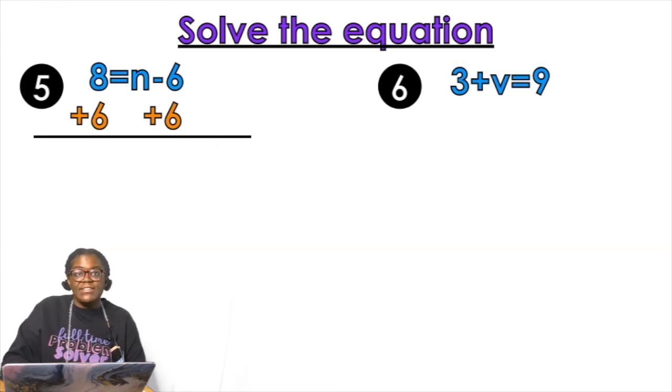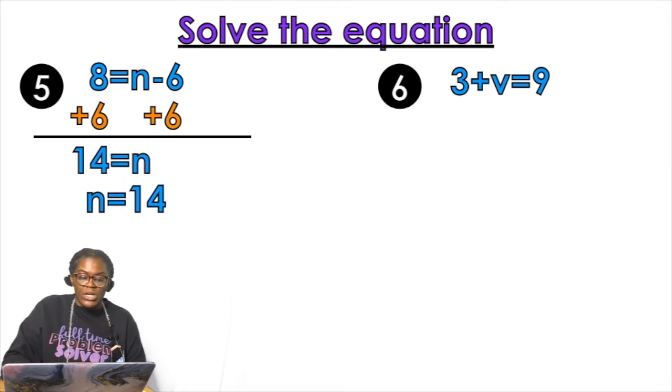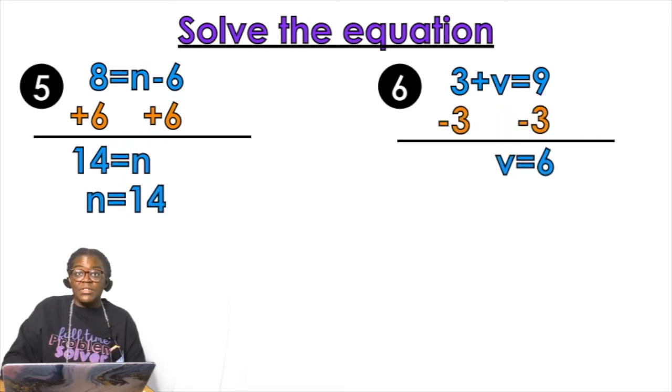So we should have added six to both sides. And we should get 14 equals n, or n equals 14. And then for the other one we should have subtracted three from both sides. We should get v equals six. Did you get those right? Yes. Scholar status.